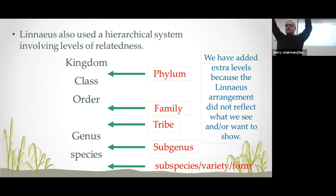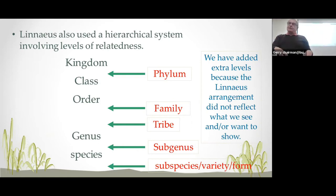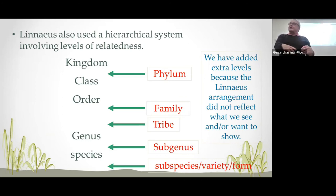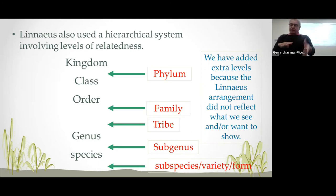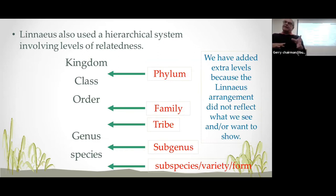He used a hierarchical system — the one at the top contains everything below. So in a kingdom there are classes, orders, genera and species. In classes there are orders, genera and species. In the genus there are numbers of species, but there's only one specific thing called that species. We've since added extra levels: phylum, family, tribe, subgenus, subspecies. Not all of these are used all the time, but particularly in the insect world it's useful to use tribes and things like that.